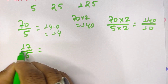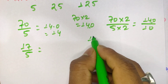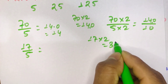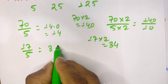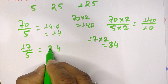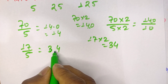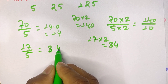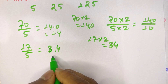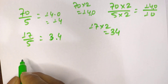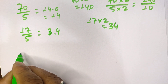Let's try the next question: 17 divided by 5. We multiply the numerator by 2: 17 times 2 equals 34. Then we place a decimal point after the last digit, so the answer is 3.4.